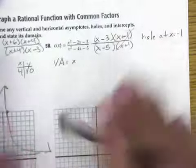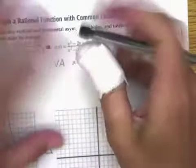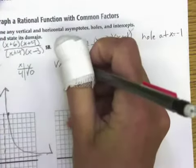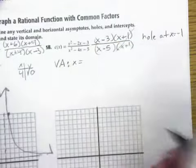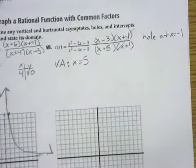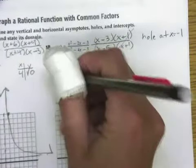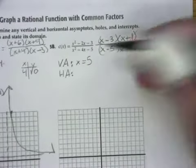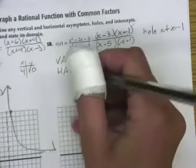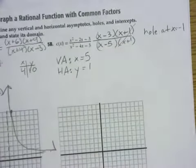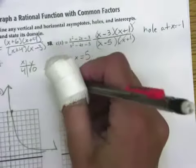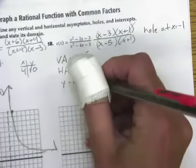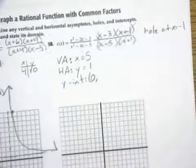My vertical asymptote is what I get when X minus 5 equals 0. So, I have a vertical asymptote at X equals 5. A horizontal asymptote at 1 over 1, which is 1. That's Y equals 1.